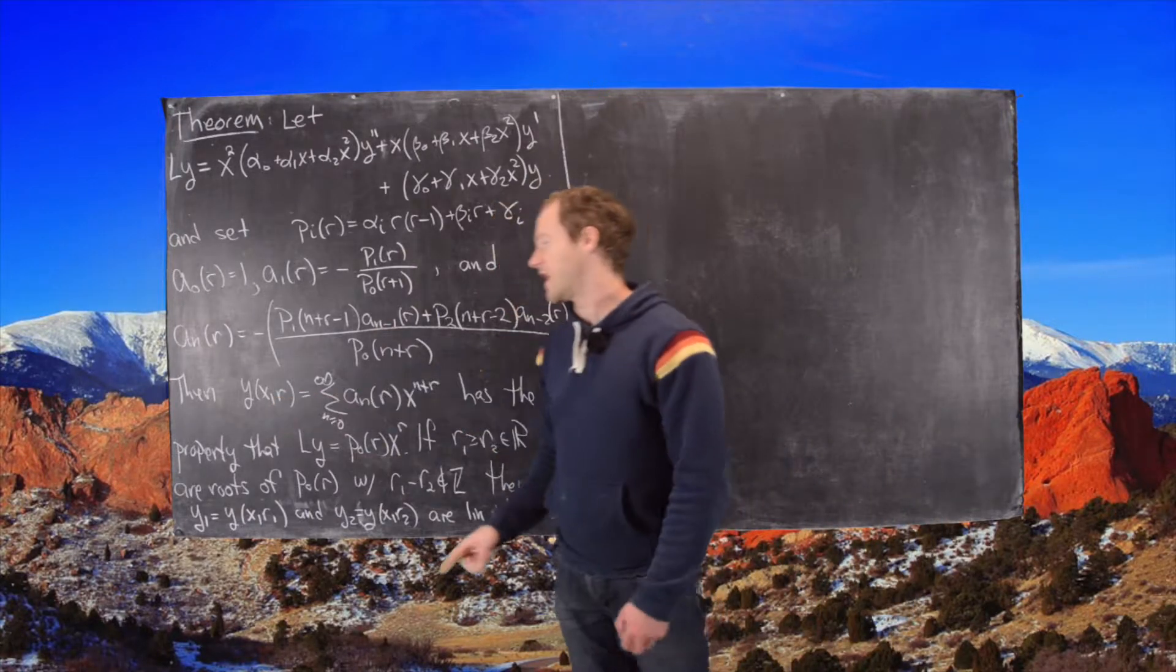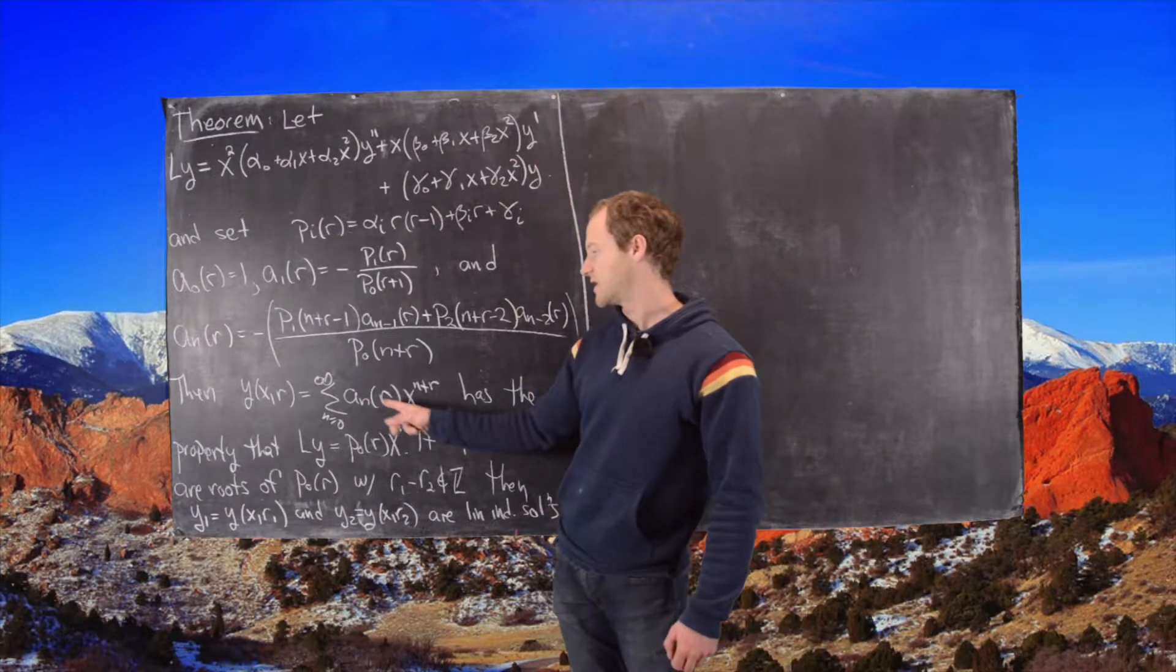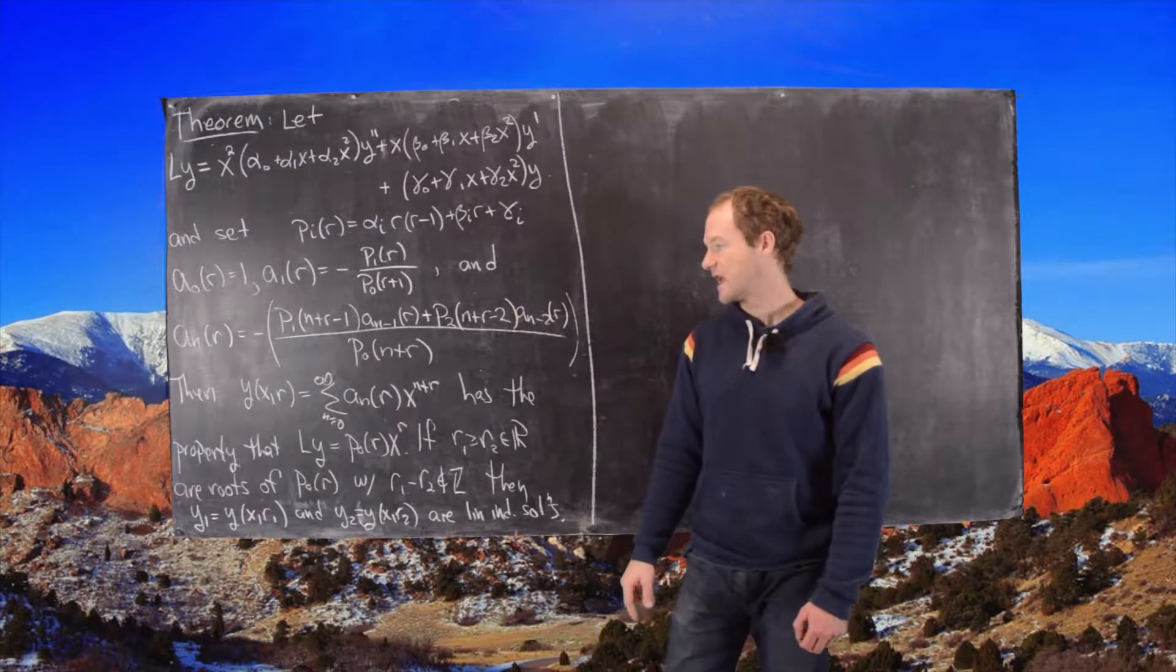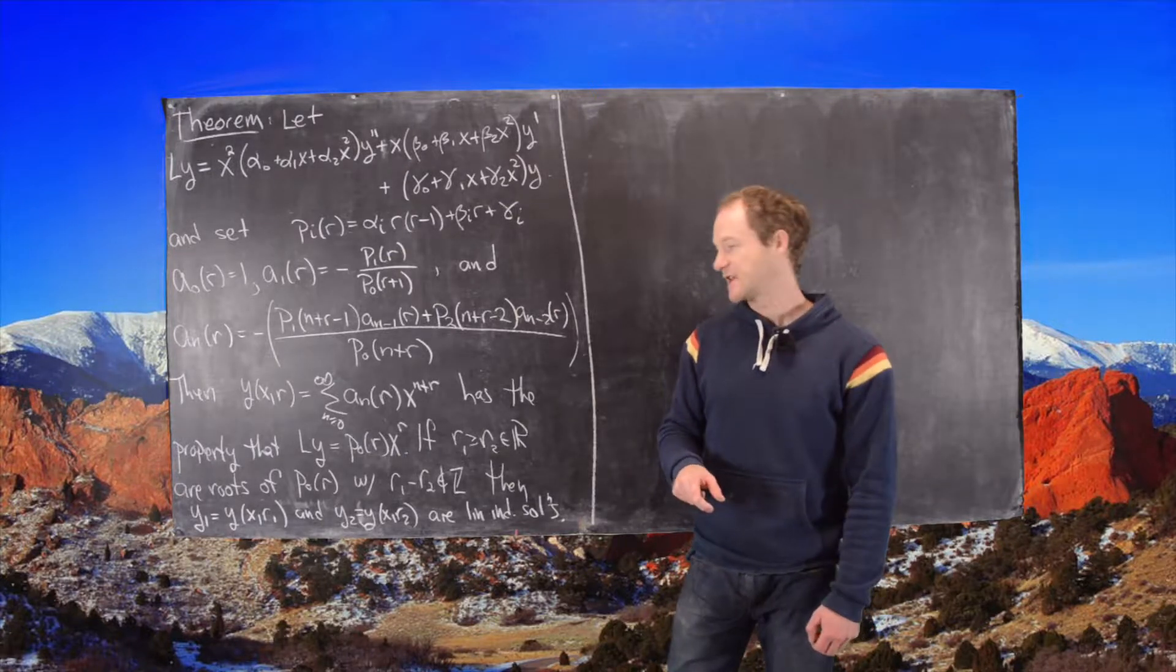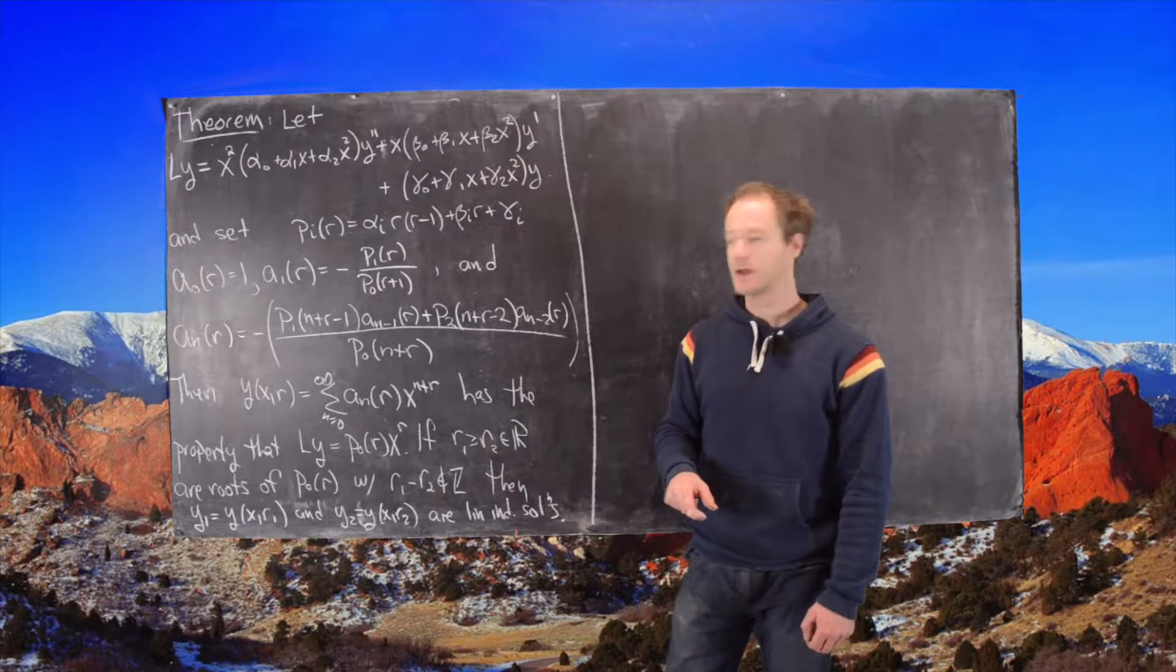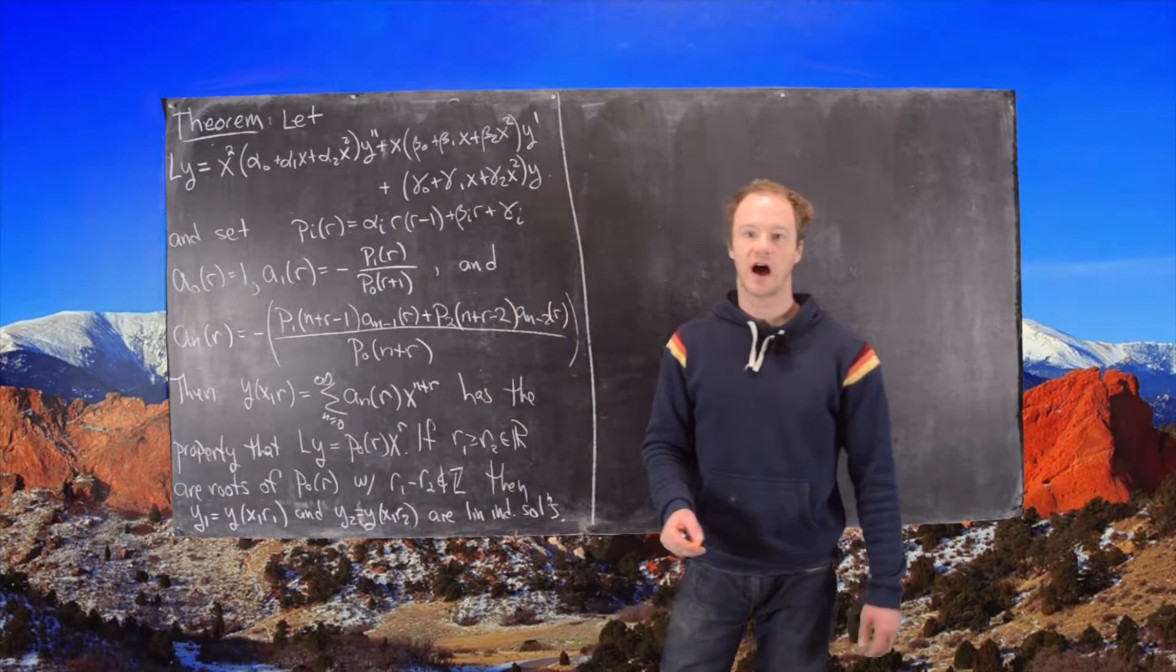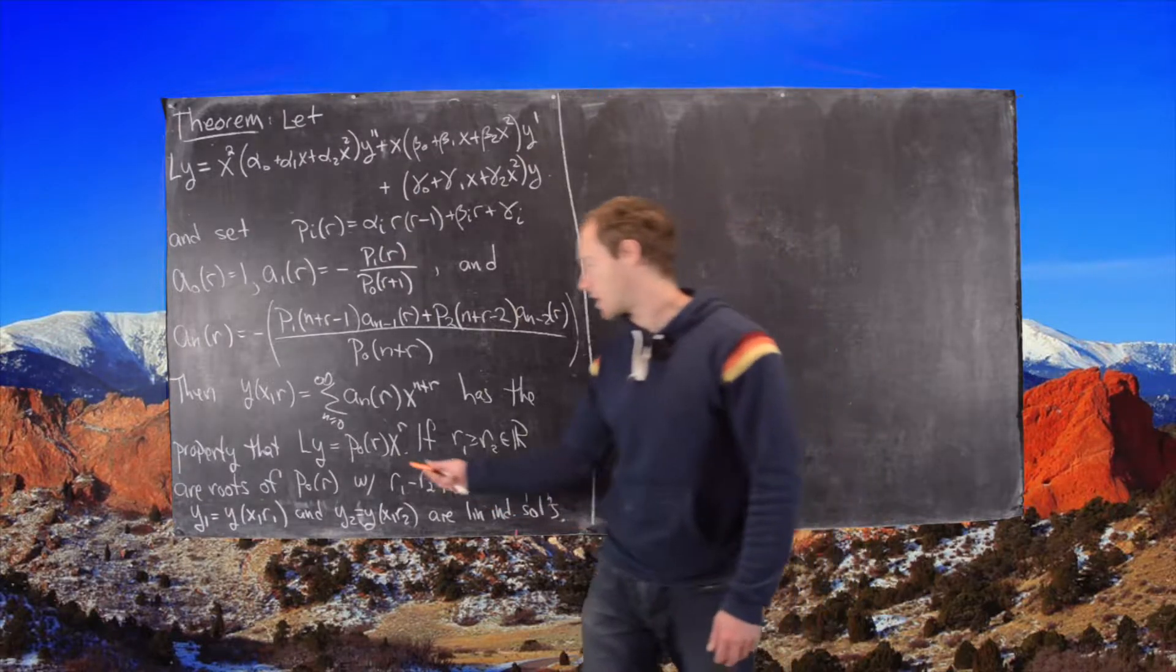Finally, if we define the following series y(x,r), and so it's the sum where the coefficients are these numbers a_n(r), and then we have x to the n plus r. So we're offset from being a power series by a little bit. So this has the property that if you evaluate it by the differential operator, you get the polynomial p_0 evaluated at r times x to the r.